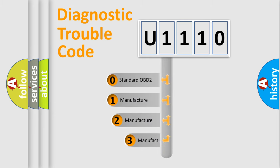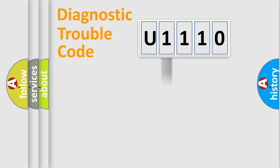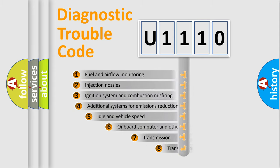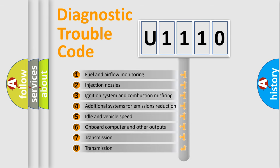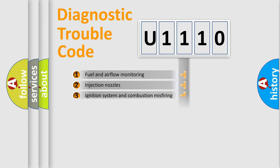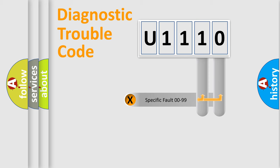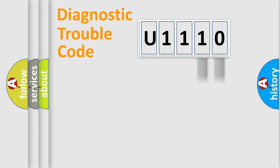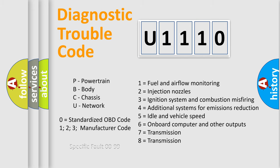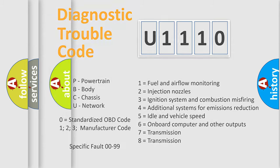If the second character is expressed as zero, it is a standardized error. In the case of numbers 1, 2, or 3, it is a more specific expression of a car manufacturer-specific error. The third character specifies a subset of errors. This division is valid only for the standardized DTC code, where only the last two characters define the specific fault of the group.